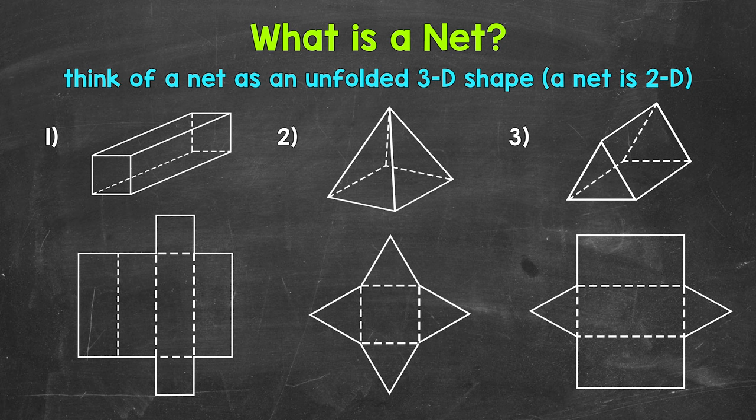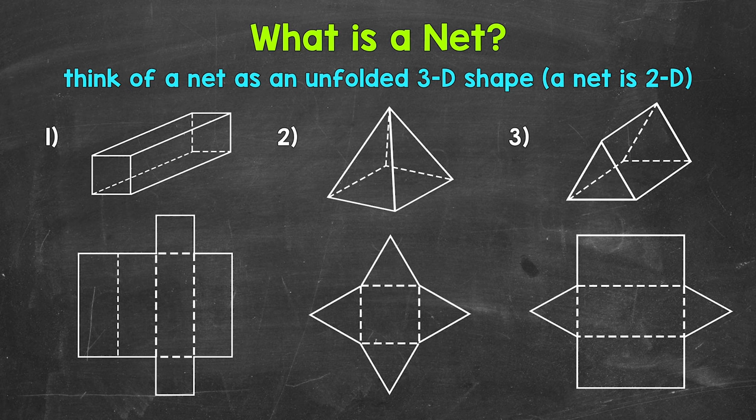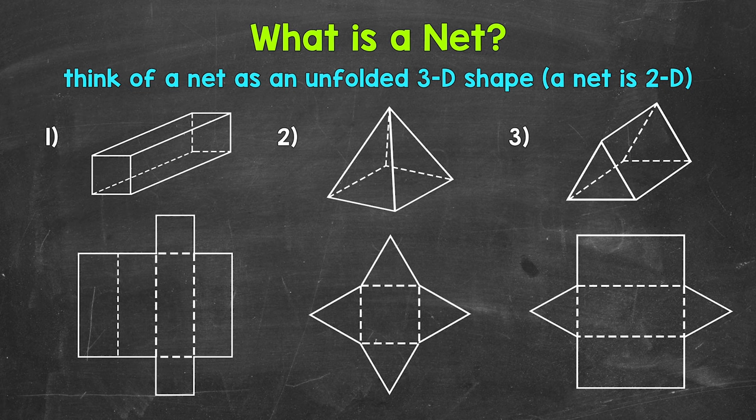You can think of nets as the unfolded form or laid out flat form of 3D shapes. Nets show all of the surfaces or faces. They are all laid out. Let's go through a few examples so we can see what some different nets look like.